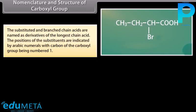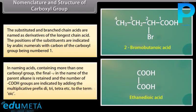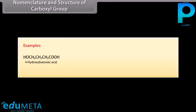The substituted and branched chain acids are named as derivatives of the longest chain acid. The positions of substituents are indicated by Arabic numerals, with the carbon of the carboxyl group being number 1. In naming acids containing more than one carboxyl group, the final 'e' in the name of the parent alkane is retained and the number of carboxyl groups are indicated by adding the multiplicative prefix di, tri, tetra, etc., to the term 'oic'. Examples: 4-hydroxybutanoic acid, prop-2-enoic acid, propanedioic acid, aromatic acids.